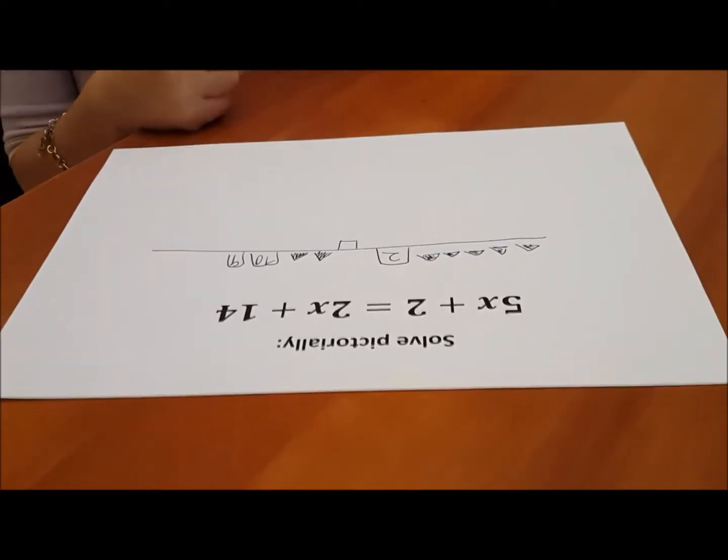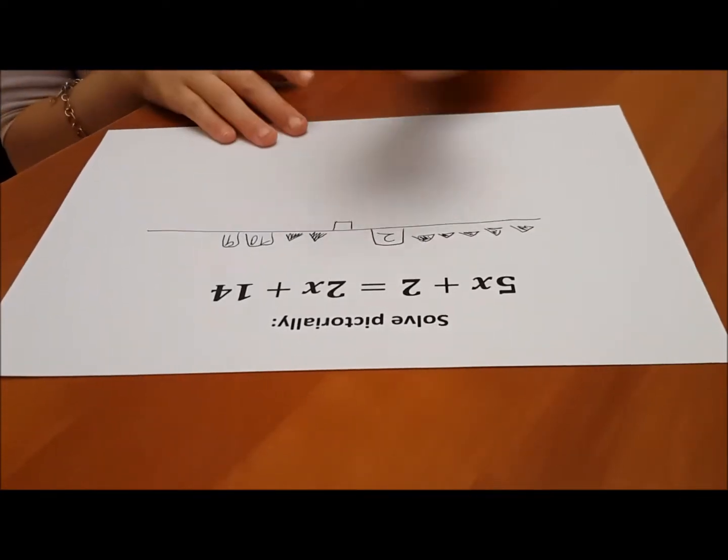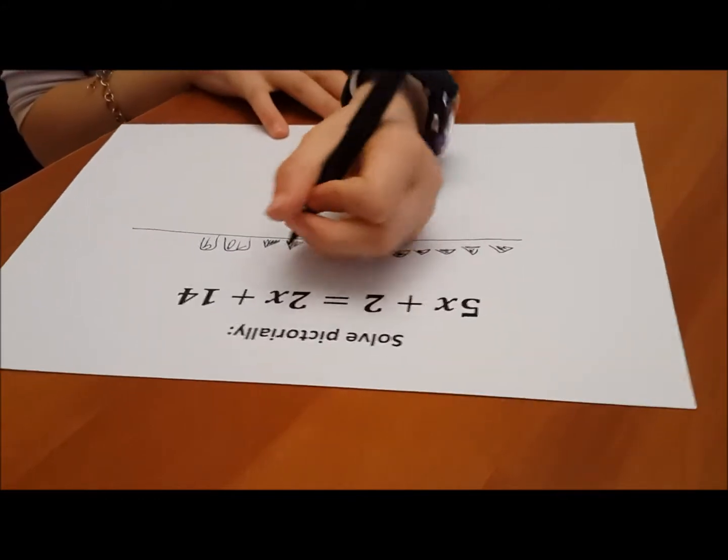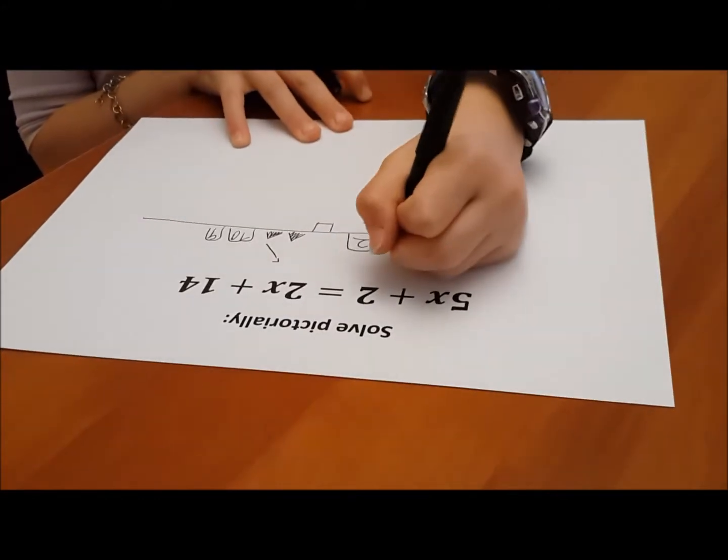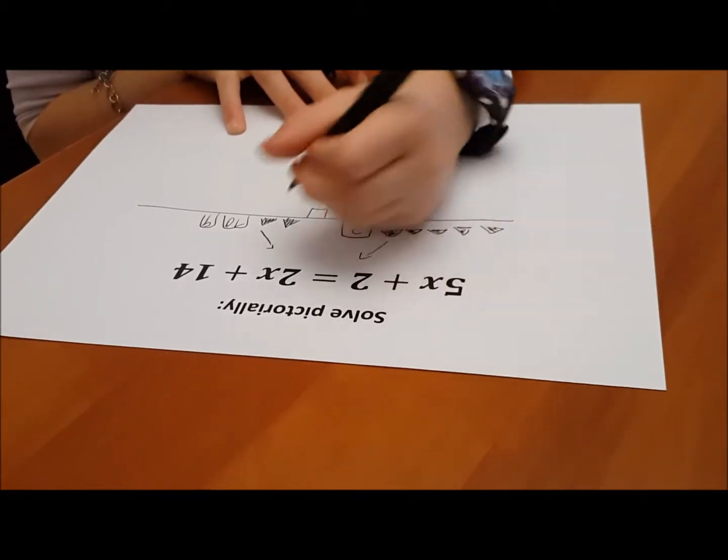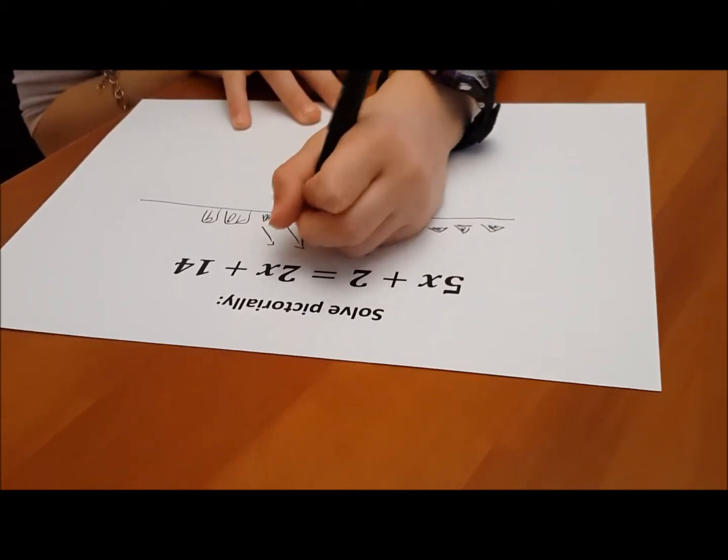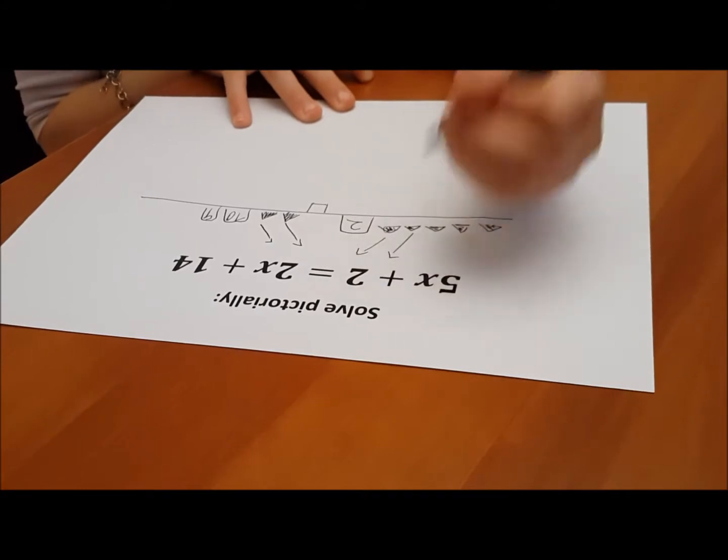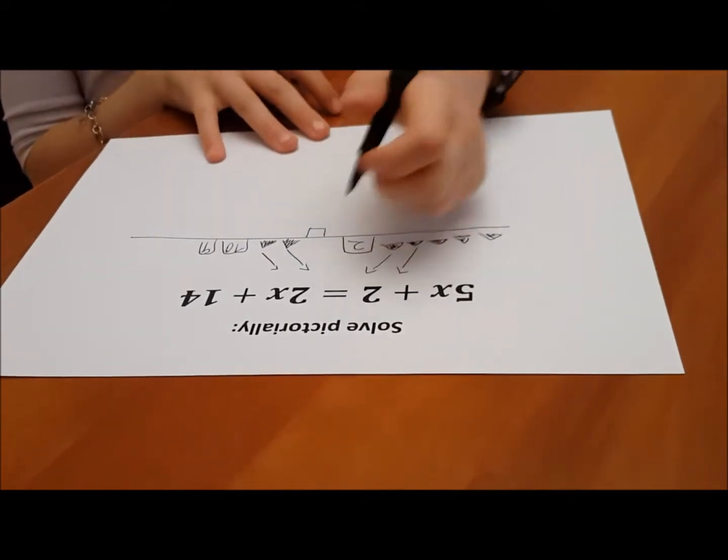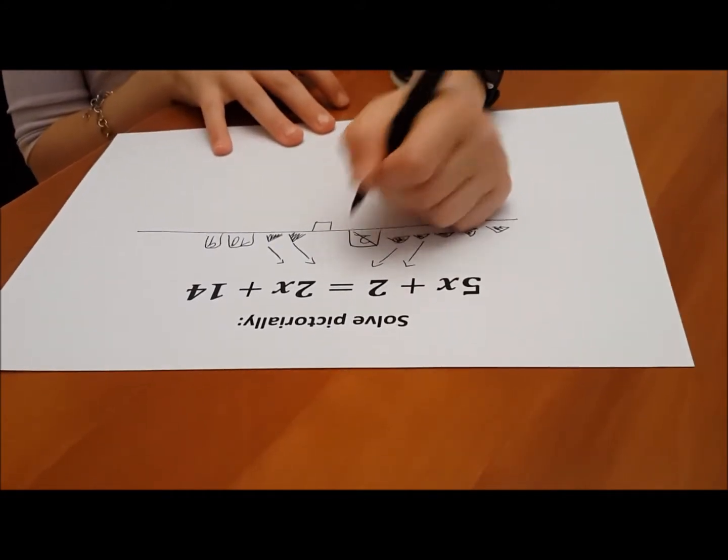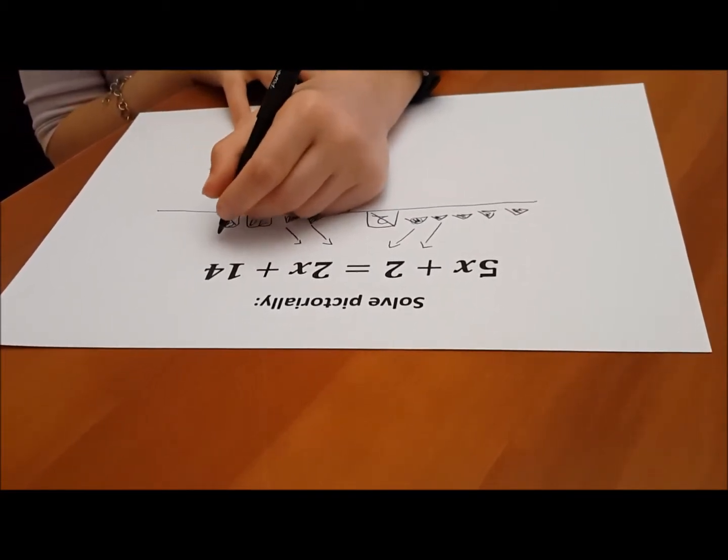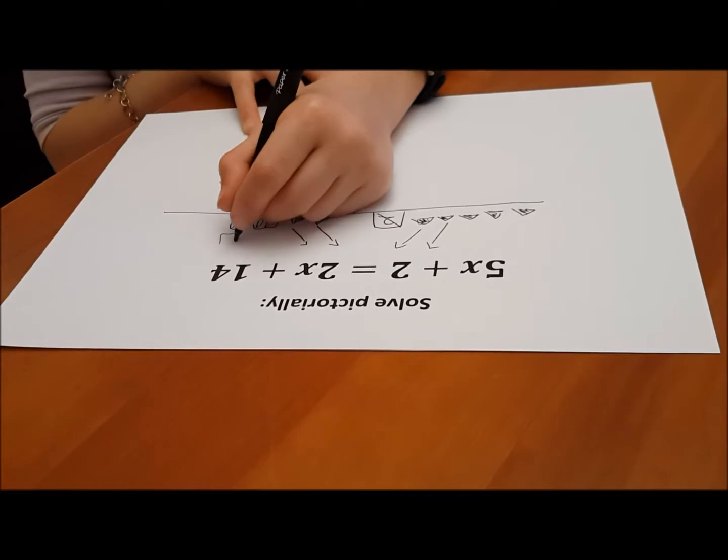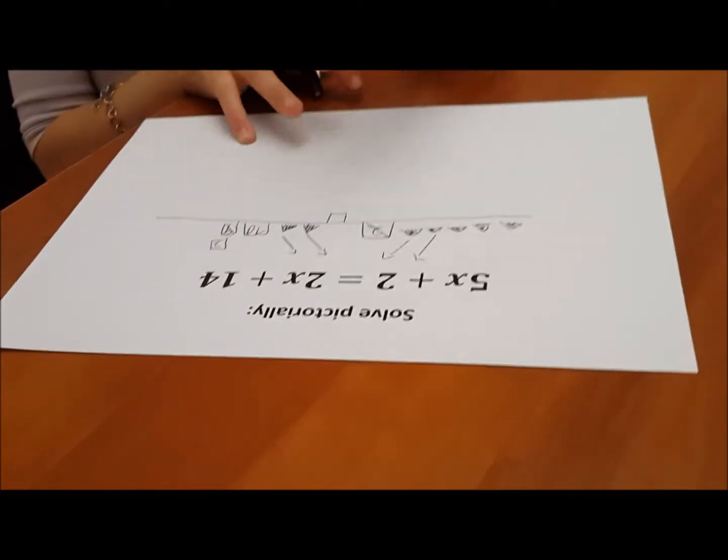So now we're ready to simplify the equation. So what can we do? Legal moves. So we're going to use arrows to show our legal moves. So an x from each side. Another x from each side. Good. We could take away a 2 from that side. And a 14. Comes a 12.